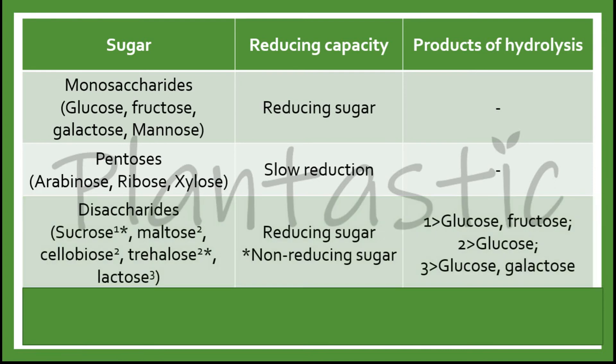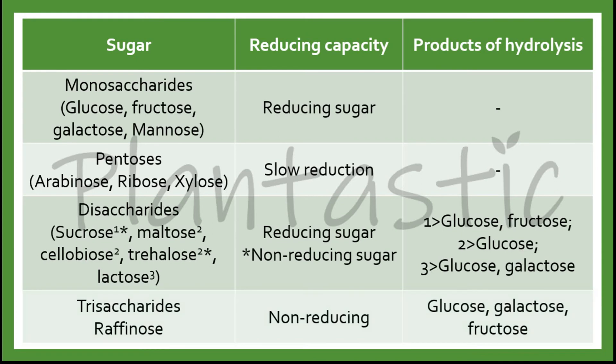Disaccharides such as sucrose, maltose, cellobiose, trehalose, and lactose. Most disaccharides are reducing sugars except sucrose and trehalose, which are non-reducing sugars. After the process of hydrolysis, sucrose will break down into glucose and fructose, while maltose, cellobiose, and trehalose will break down into glucose. Lactose will break down into glucose and galactose. The last class of sugars is trisaccharides, which is raffinose. It is a non-reducing sugar which hydrolyzes into glucose, galactose, and fructose.